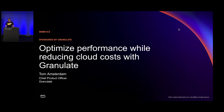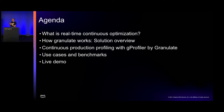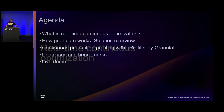Today we're going to talk about optimizing performance and reducing cost in AWS using Granulate's real-time continuous optimization solution. Our agenda today is to speak about what is the concept of real-time continuous optimization, which is a new concept in the maturity model of reducing costs, how Granulate works in specifics, our open-source tool the G-Profiler, and then show some use cases in a demo.